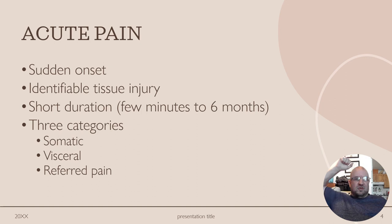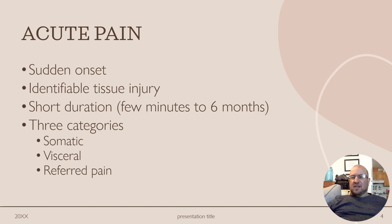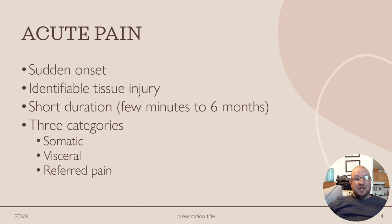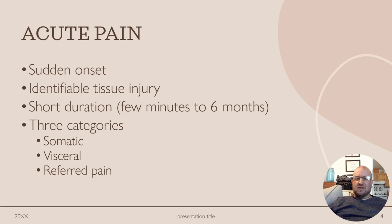Acute pain has a sudden onset and usually you can identify where the pain is. Its duration ranges from a few minutes to about six months, and there are three categories. Somatic pain originates from the musculoskeletal system, including the skin, muscles, bones, joints, and connective tissue. It is often described as sharp, localized, or well-defined pain that is easier for individuals to pinpoint.